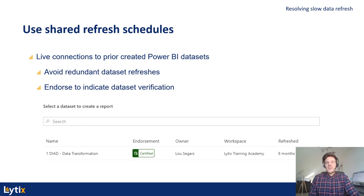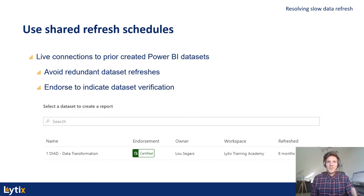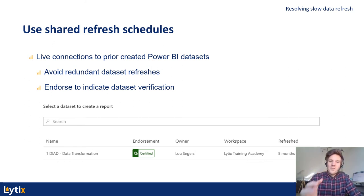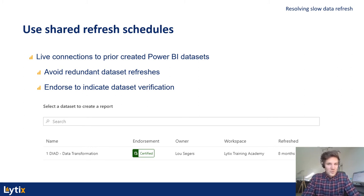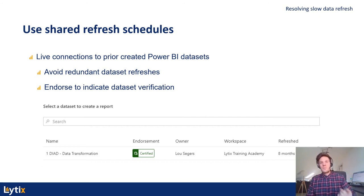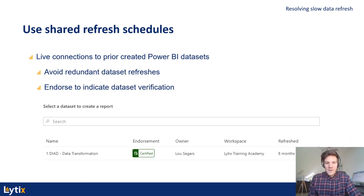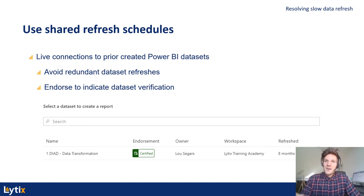The use of shared dataset refreshes: if possible, always try to reuse a shared dataset. Why? Because it's the same dataset and only needs one specific refresh. You can use a live connection to previously created Power BI datasets, and with the December release of Power BI, you can also extend it with composite models — adding additional data from other sources such as an Excel report, a SQL Server, or an SAP HANA data source. Endorsing your datasets can also be very useful, making sure users can see whether a dataset has been verified by the business and contains correct data.